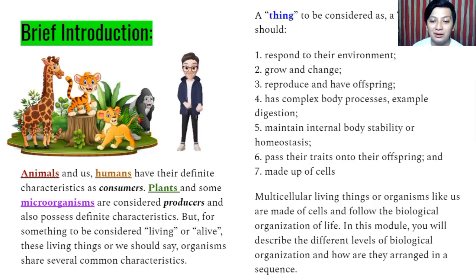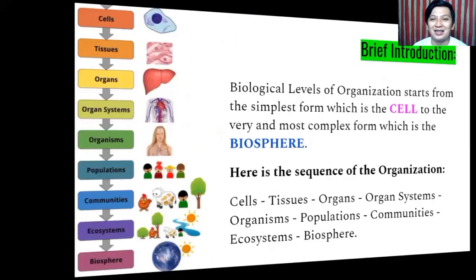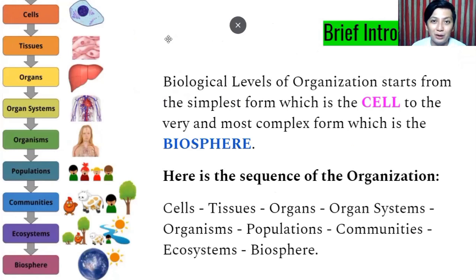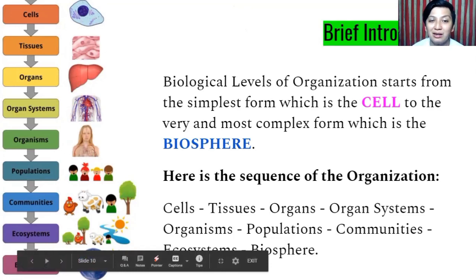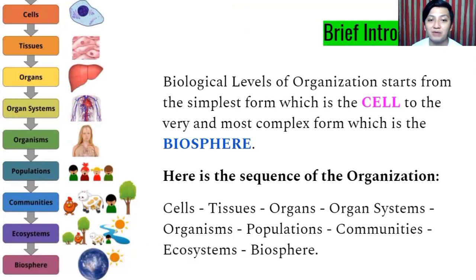In this module, you will describe the different levels of biological organization and how they are arranged in a sequence, and how they work together as a team. These are the biological levels of organization. It is from the very tiny material called cell, then on the way to tissues, organs, organ systems, organisms, populations, communities, ecosystem, and then biosphere, which is the largest part of the biological organization. Biological levels of organization start from the simplest form, which is the cell, to the most complex, which is the biosphere — the living part of the earth.